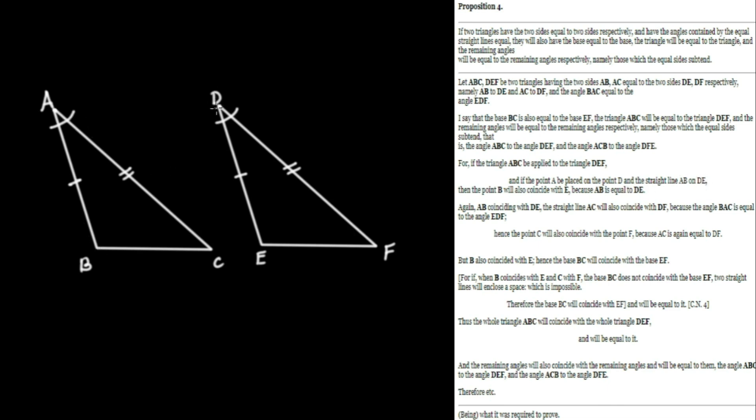so we're going to take the straight line AB and place it upon DE, then the point B, this point right here, will coincide with the point E, because AB is equal to DE. And then he says, AB coinciding with DE, the straight line AC will also coincide with DF, because the angle BAC is equal to the angle EDF. So when we apply this triangle to the other one, AC is already given to be the same as DF. C will coincide with F.